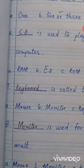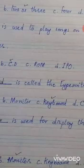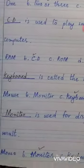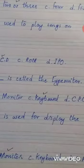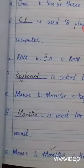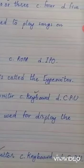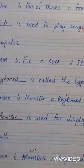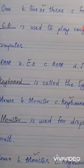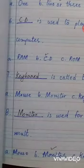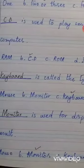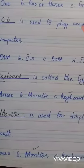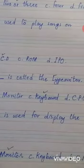Number six: dash is used to play songs on computer. Options are RAM, CD-ROM, IPO. Answer is CD. Number seven: dash is called the typewriter. Options are mouse, monitor, keyboard, CPU. Answer is keyboard.